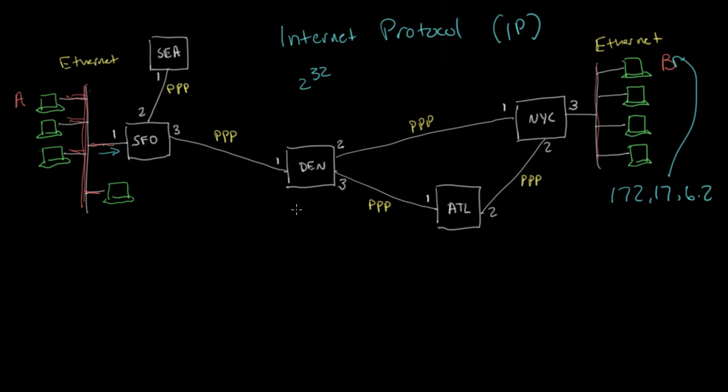So Denver, for example, could have a route in its forwarding table that says, to get to the prefix 172.17/16, and I'll explain what that is in a moment, go out interface 2.